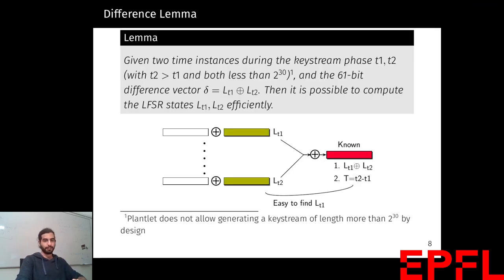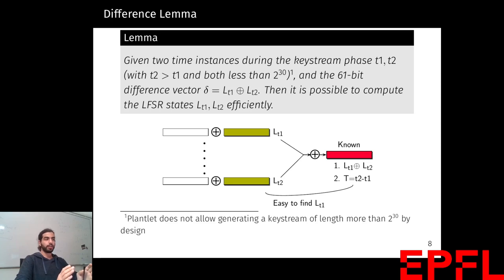The first observation we made was that as the LFSR function is fully linear, if you have two LFSR states at times t1 and t2, knowing the difference between these two LFSRs and the difference between times t1 and t2, you can recover the values of the LFSR at times t1 and t2. This is basic linear algebra: given LT1 XOR LT2 and t2 minus t1, one can compute LT1 and LT2.